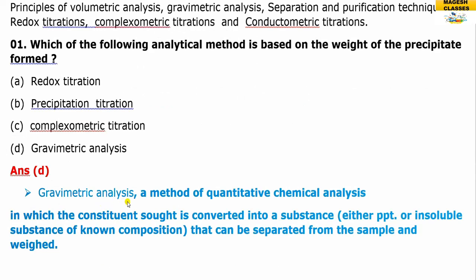Gravimetric analysis is a method of quantitative chemical analysis. The particular material — the precipitate, which is the insoluble substance — is separated and weighed. So this is the weight method; this is gravimetric analysis.